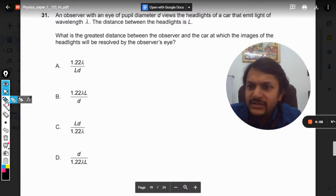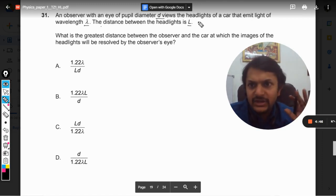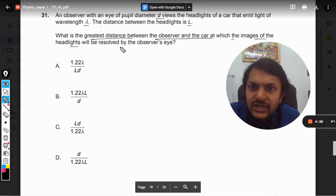Okay, dear students, let us see what is there in this question. An observer with an eye of pupil diameter D views the headlights of a car that emit light of wavelength lambda. The distance between the headlights is capital L. What is the greatest distance between the observer and the car at which the images of the headlights will be resolved by the observer's eye?